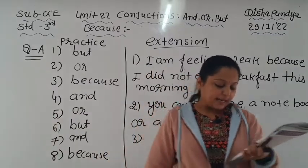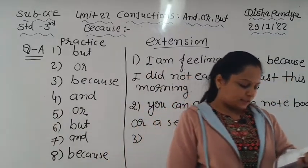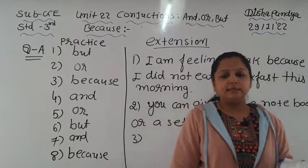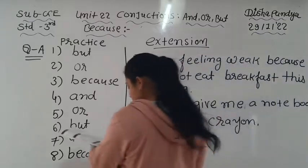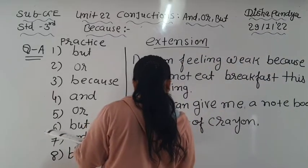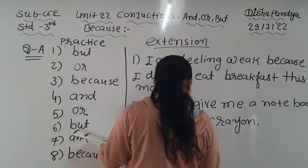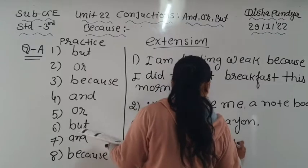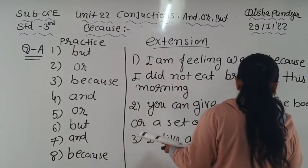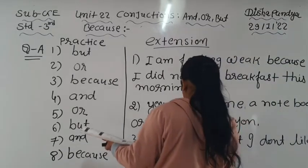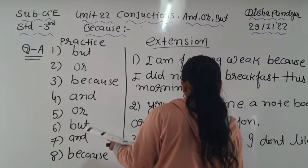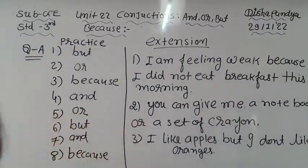Number three: 'I like apples. I don't like oranges.' Here we use 'but' because there is a contrast. The joined sentence is: 'I like apples, but I don't like oranges.' So here our practice and extension exercise is completed. Now you can write both exercises in your term book.